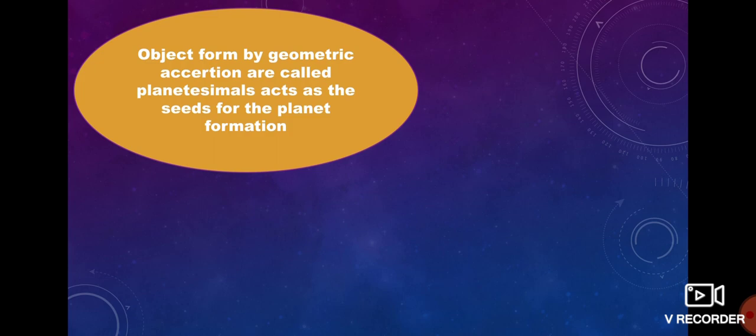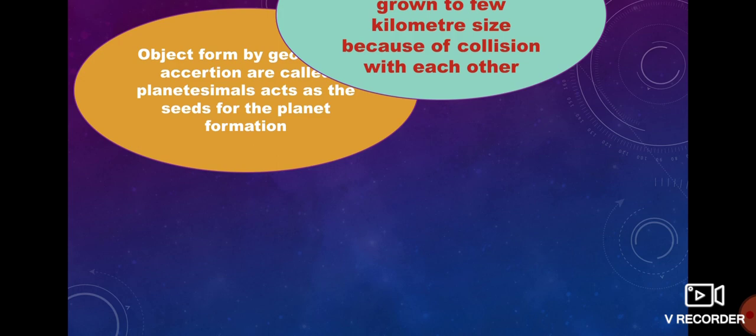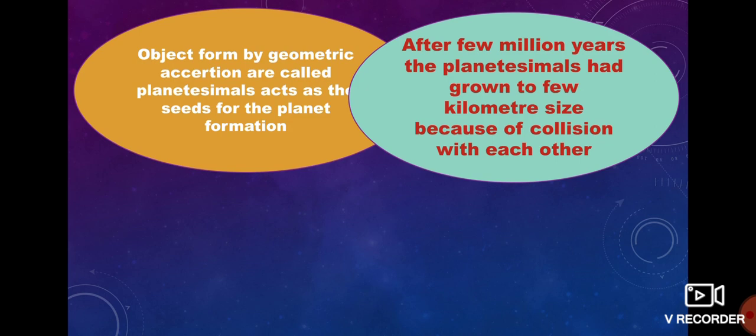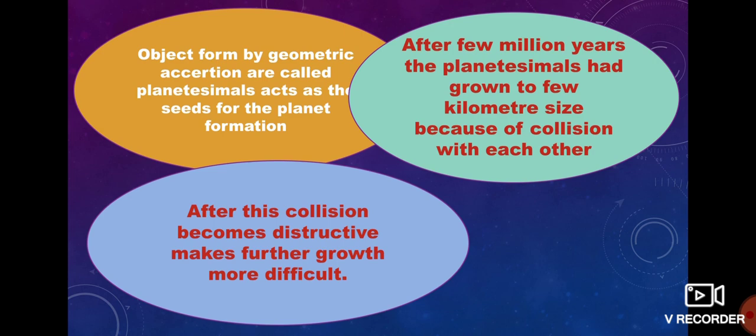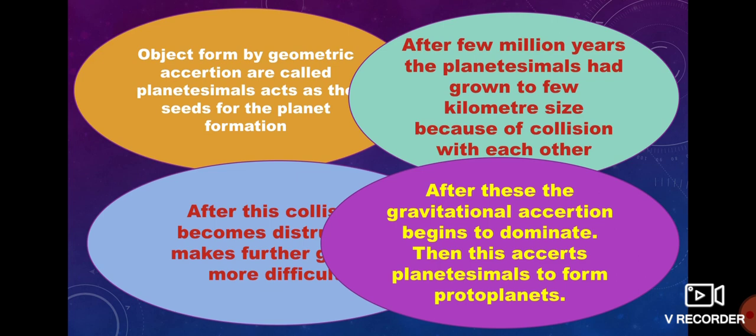Objects formed from geometric accretion are called planetesimals, which act as seeds for planet formation. After a few million years, planetesimals had grown to a few kilometers in size due to collisions with each other. After this, collisions become destructive, making further growth more difficult because the geometric accretion cross-section becomes low. Then gravitational accretion begins to dominate and accretes planetesimals to form a protoplanet.